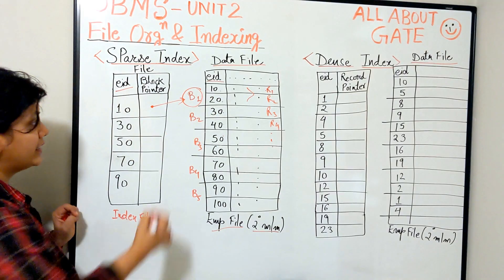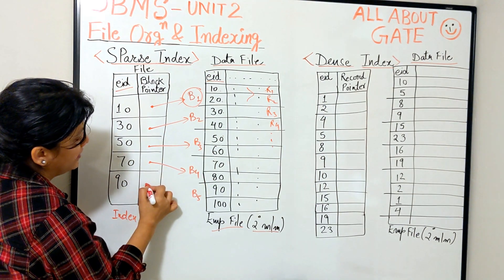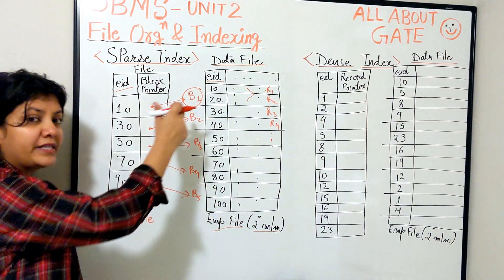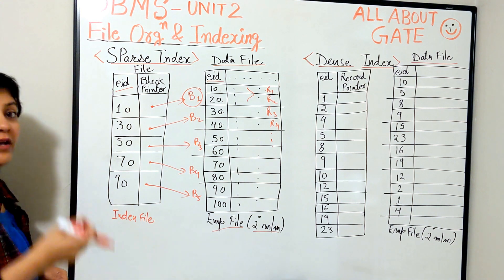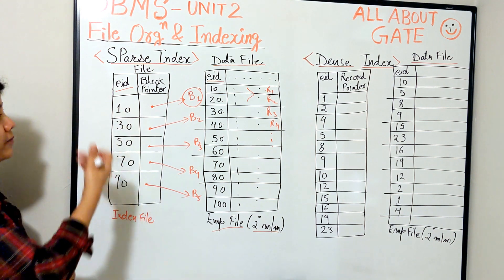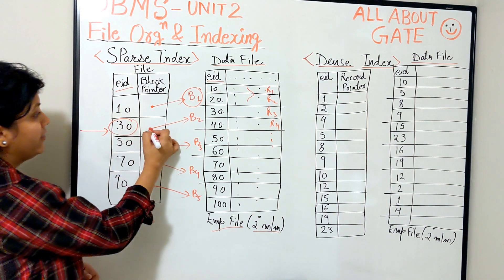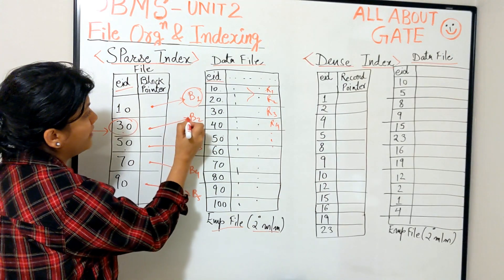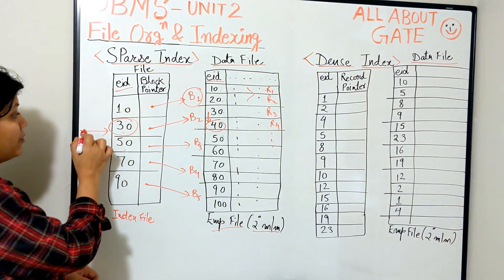For each block I will simply take a block pointer and point to its address. If someone queries 'find the record where employee ID is 40,' you come to the index, look for values 30 and 50 — since 40 is between these two, you take this block and search there to find 40. So one block access here and one block access there.